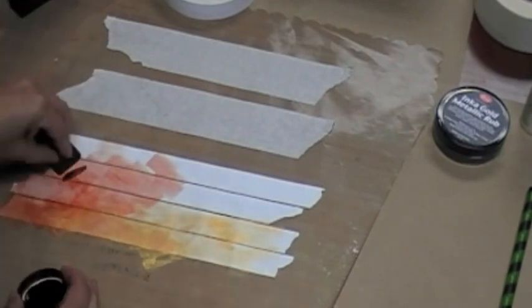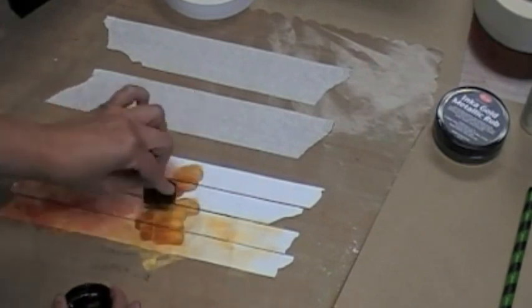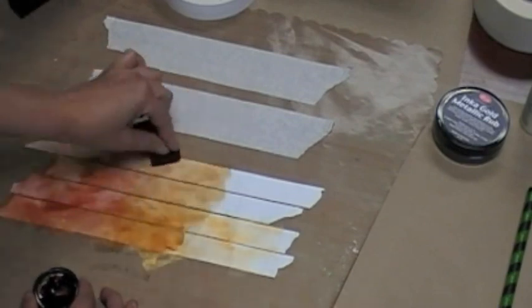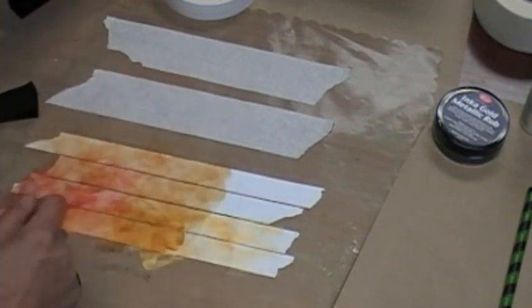I'm gonna add a little brown. Brown kind of warms up the gold and tones down the orange, makes it a little bit more like my journal page. Then we're gonna add a little bit more gold.